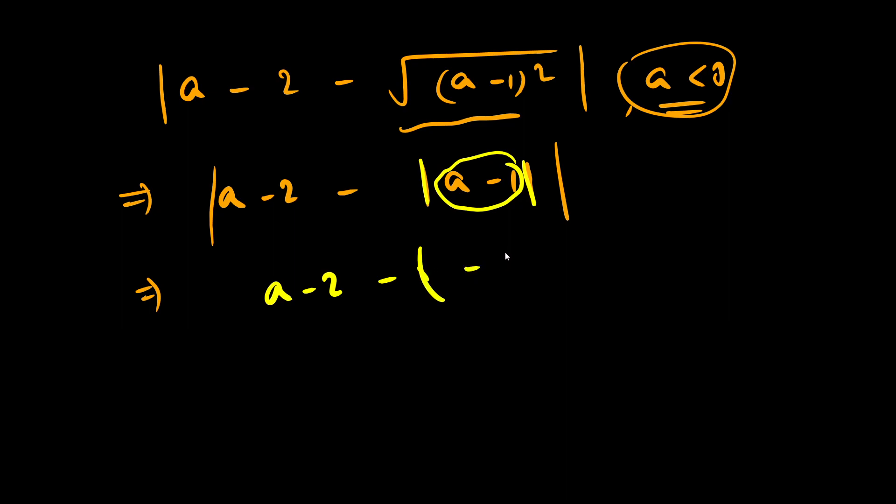This simplifies to -(a - 2 - (-(a-1))), which becomes |a - 2 + a - 1|.